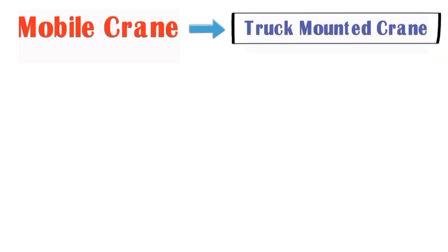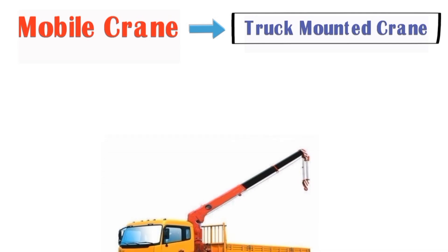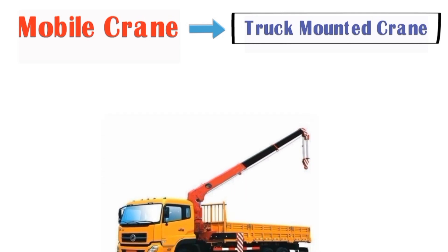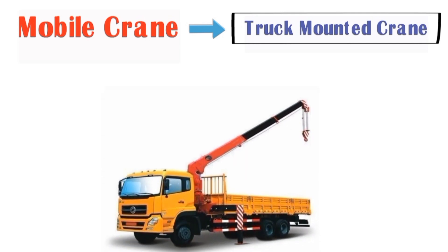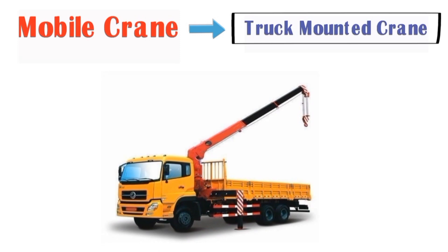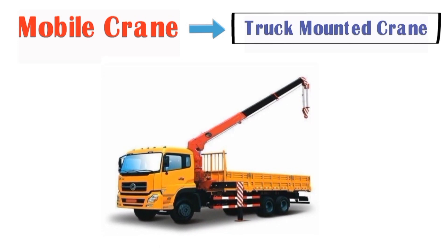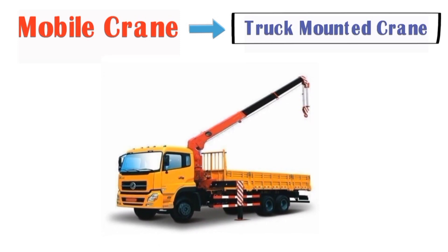The first type under mobile crane is the truck mounted crane. This crane is mounted on a truck, which is why it is called a truck mounted crane. As you can see in the picture, the front shape is like a truck, and the crane is mounted on the back side. You can easily move this type of crane from one place to another to finish your work.